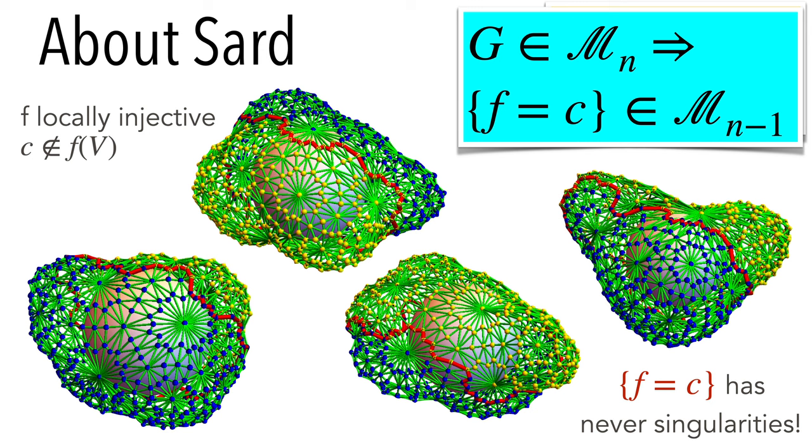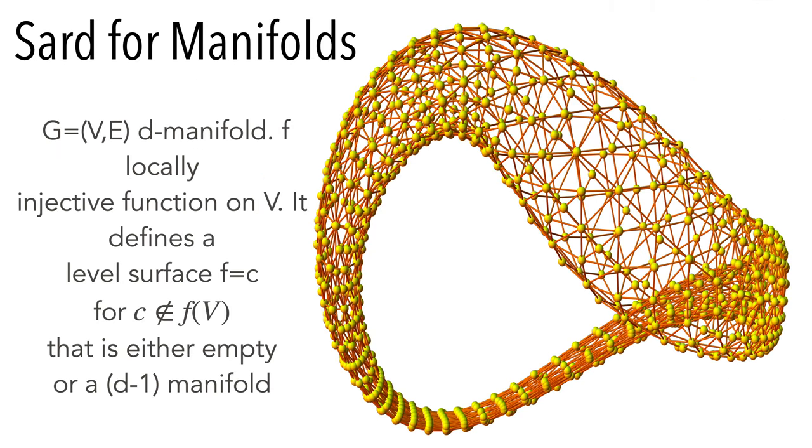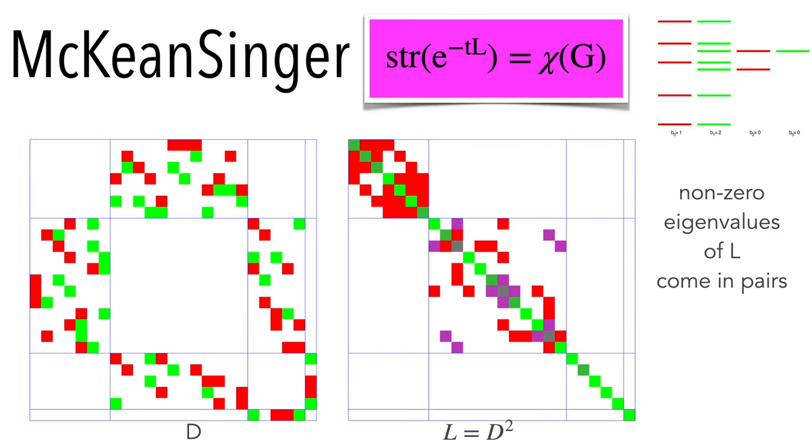About Sard's theorem, this is totally amazing because in the discrete, when you look at level surfaces of a manifold, we get just a lower-dimensional manifold if the value C is not taken on the vertices. So there's never any singularity like in the continuum. D-dimensional manifolds are defined recursively as graphs for which every unit sphere is a d-1 sphere. McKean-Singer is another result: if you look at the non-zero eigenvalues of the even forms and the eigenvalues of the odd forms, they agree, so they come in pairs, which is very useful. For example, you can express this as a super trace of the heat kernel, which is always the Euler characteristic.